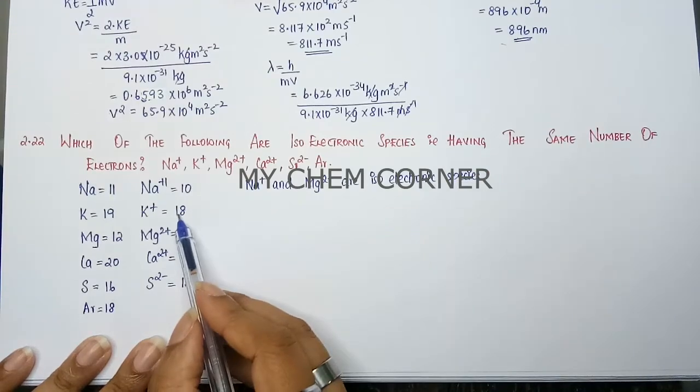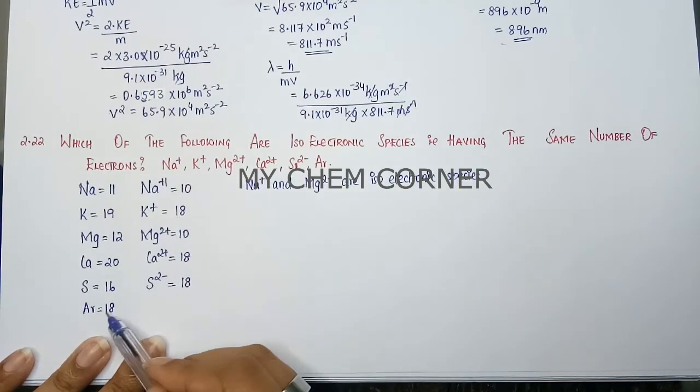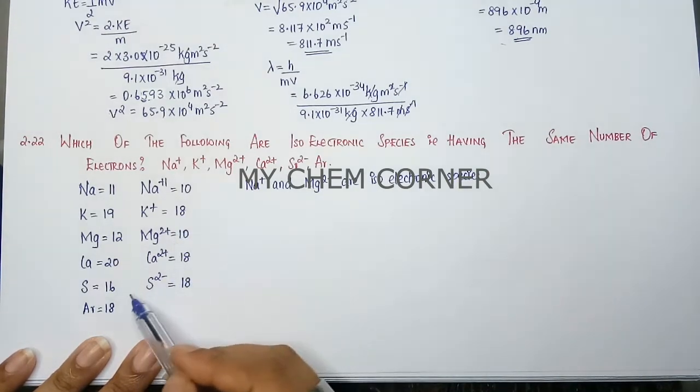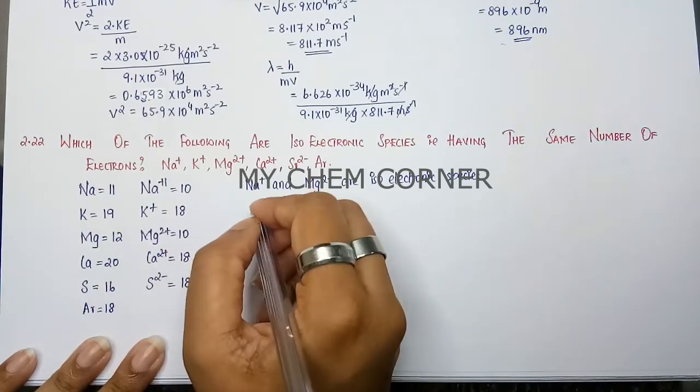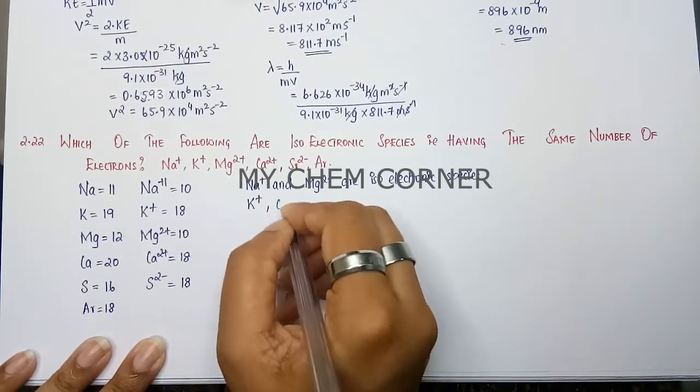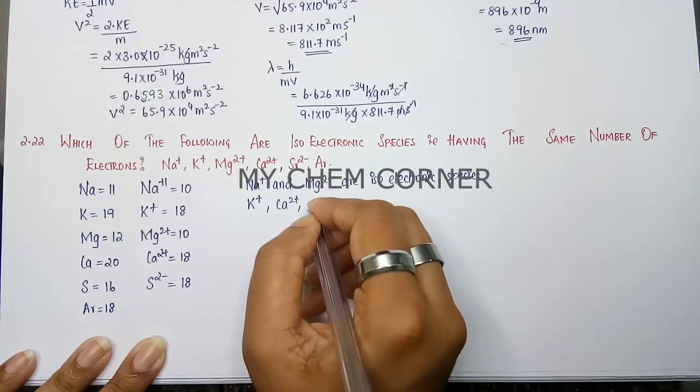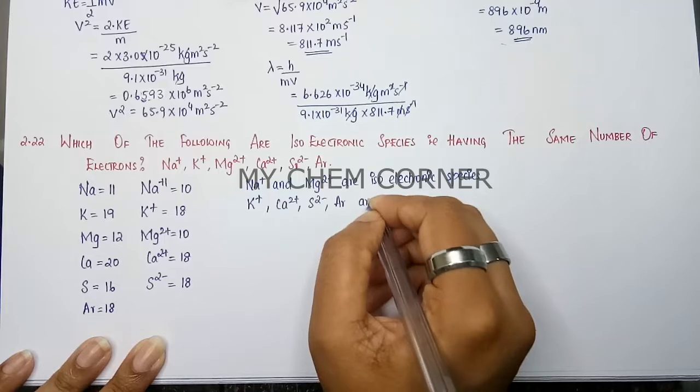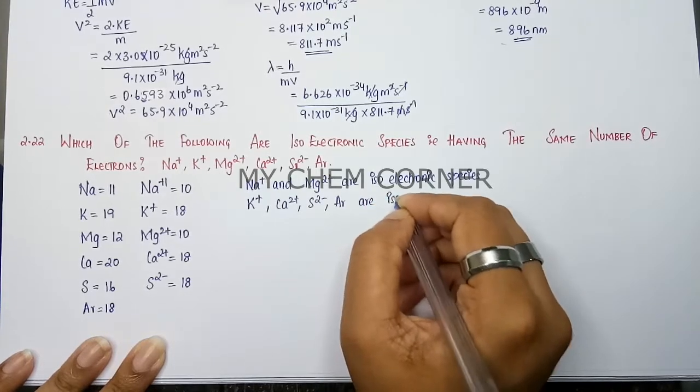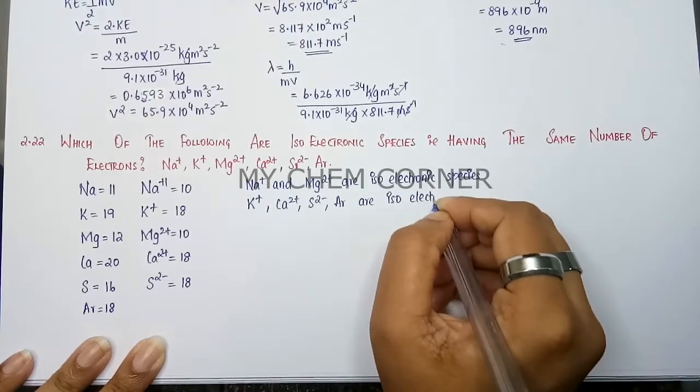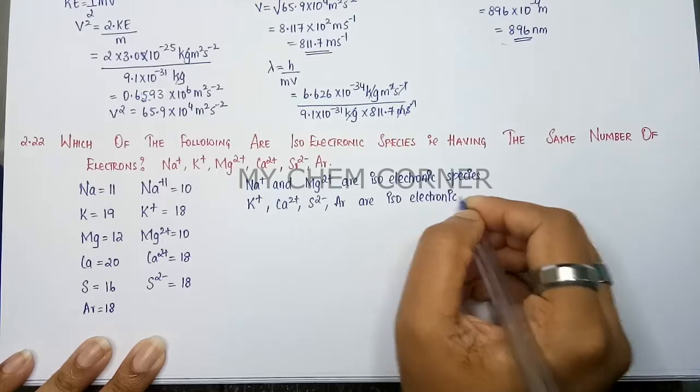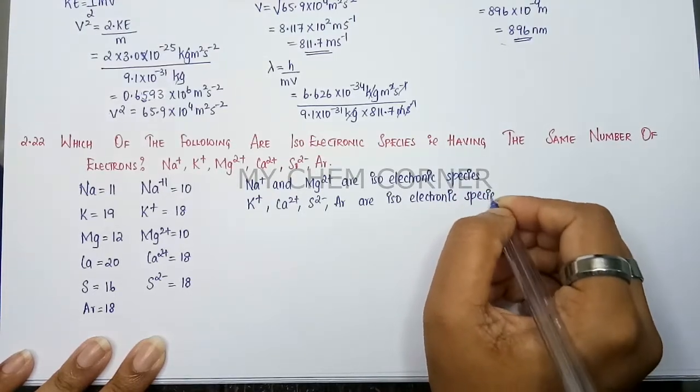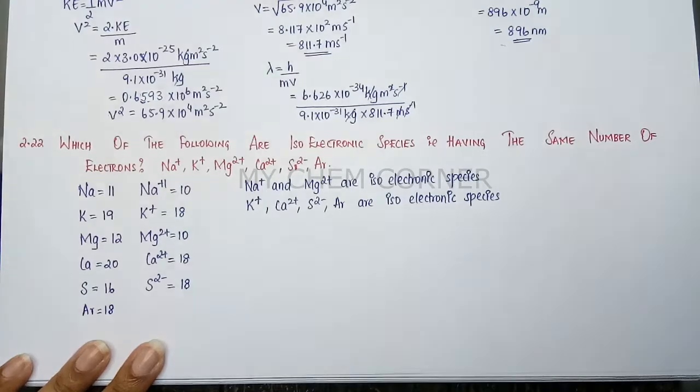Then the remaining K+, Ca2+, S2-, and Ar all have 18 electrons. So they are one set of isoelectronic species. K+, Ca2+, S2-, and Ar are isoelectronic to each other. So knowing your atomic number is important in identifying isoelectronic species.